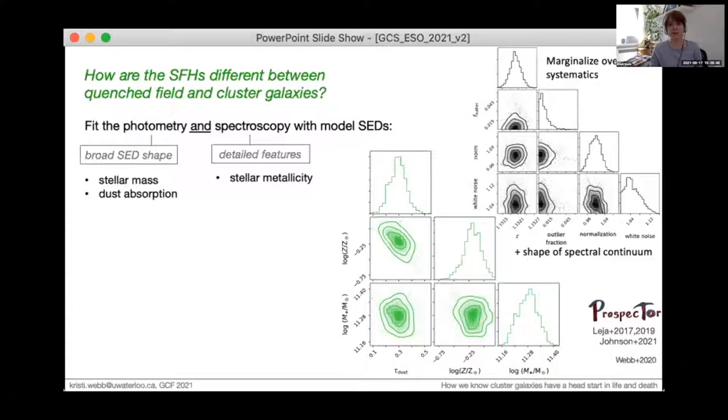It's non-trivial to simultaneously fit the SED and the spectroscopy, especially when things like the continuum shape in the spectroscopy are susceptible to many systematic effects. The challenge is to identify useful information in the spectra while marginalizing over everything else. A second challenge are the degeneracies between the parameters, for example, between dust absorption, metallicity, and age, which all conspire to alter the SED in similar ways.